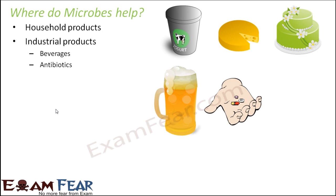Microbes also help in the preparation of antibiotics. Antibiotics are chemicals which help to kill disease-causing bacteria. We saw that when persons suffer from diseases like typhoid caused by bacterial infection, they are treated with antibiotic medication. Antibiotics are medicines capable of killing disease-causing microbes. Interestingly, these antibiotics are themselves prepared from microbes — one set of microbes helps prepare antibiotics, while another set of disease-causing microbes needs to be killed by those antibiotics.